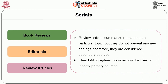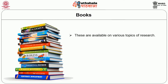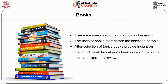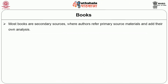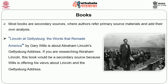Their bibliographies can be used to identify primary sources. Books are available on various topics of research. The uses of books start before the selection of topic. After selection of a topic, books provide insight on how much work has already been done on the same topic in a literature review. Books are a secondary source but the most authentic one among secondary sources. Most books are secondary sources where authors refer to primary source materials and add their own analysis. For example, Lincoln at Gettysburg: The Words that Remade America by Gary Wills is about Abraham Lincoln's Gettysburg Address — this book would be a secondary source because Wills is offering his views about Lincoln and the Gettysburg Address.